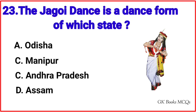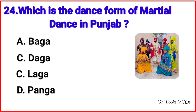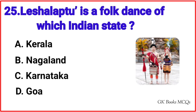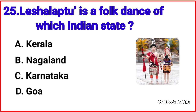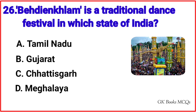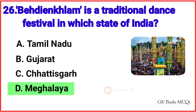Question number 23: The Jago'i dance is a dance form of which state? Correct answer is option C, Manipur. Question number 24: Which is the martial dance form in Punjab? Correct answer is option A, Baga. Question number 25: Lishalabtu is a folk dance of which Indian state? Correct answer is option B, Nagaland. Question number 26: Behjankhlam is a traditional dance festival in which state of India? Correct answer is option D, Meghalai.